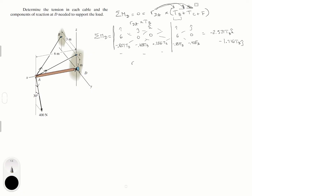The second matrix is rDA × TC: i, j, k with rDA = (6, 0, 0) and TC = (−0.949·TC, 0, 0.316·TC). Most terms are zero. The only non-zero negative diagonal term gives −0.316·TC × 6 in j = −1.896·TC in j.